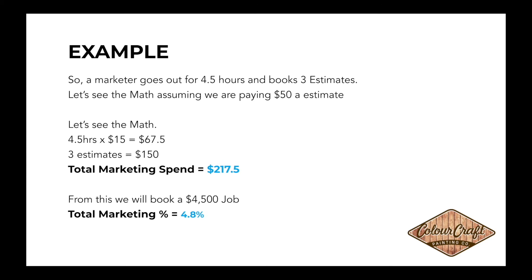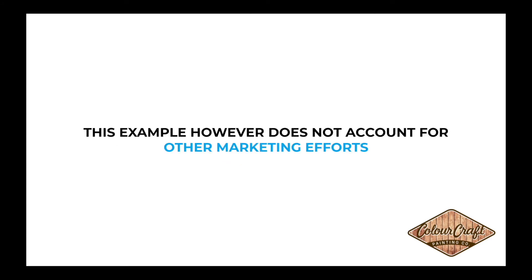Dividing $217.50 by 4.5 hours, that marketer would make $48.33 an hour. We can expect the team to book a $4,500 job from this. Dividing $217.50 by $4,500, the marketing spend comes in at 4.8 percent — very healthy. I'm totally okay with spending 4.8 percent to get a $4,500 job. This example, however, would not be accounting for other marketing efforts, so it's important to decide how much you want to be spending as a whole on your P&L.